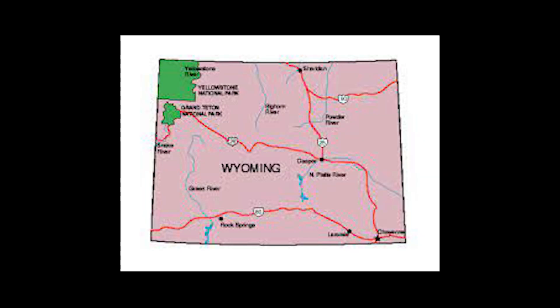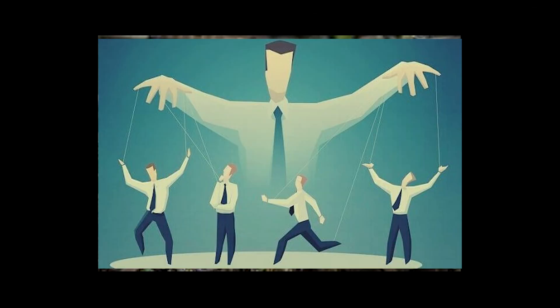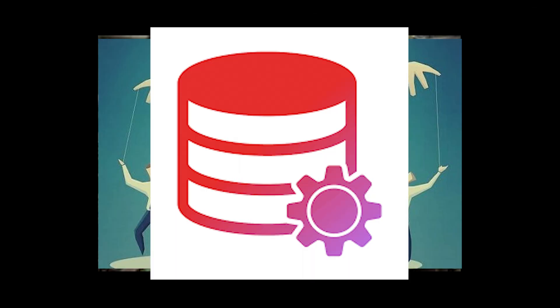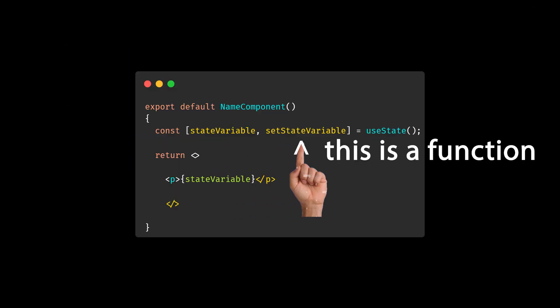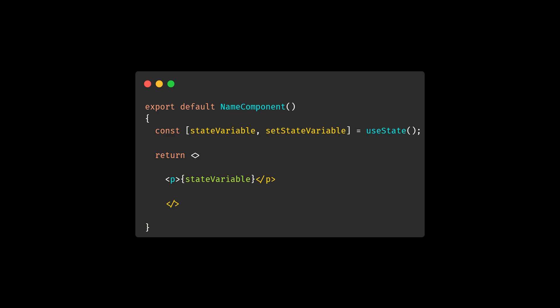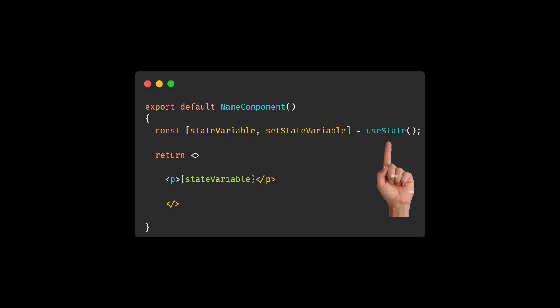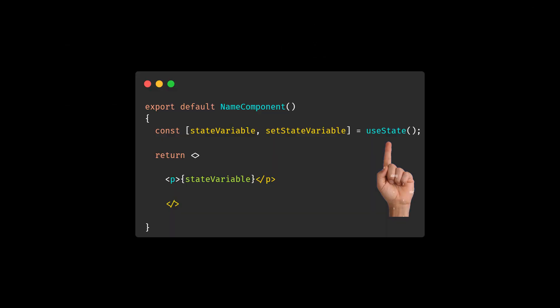Let's talk about state — and no, not Wyoming, that isn't even a state. State in React is a way to track and manipulate data that is bound to change throughout the execution of the program. When state is initialized, you prefix the variable with const — not sure why, just do it. Then inside the brackets, you insert the state variable and a name for a new callback function. Use the useState hook to compile the names into a stateful variable.